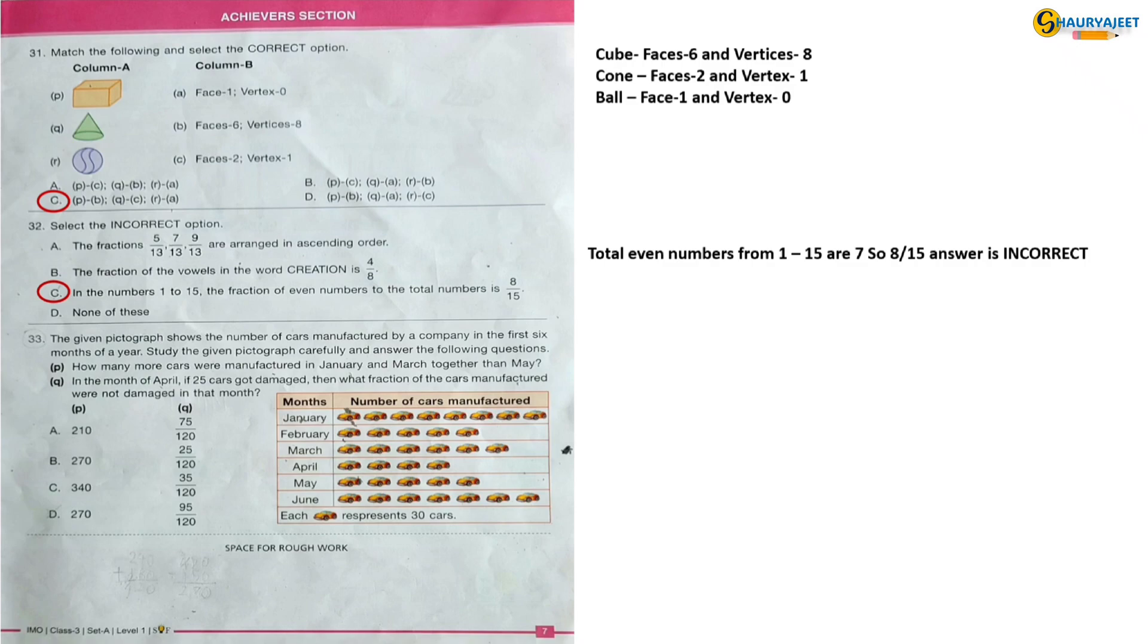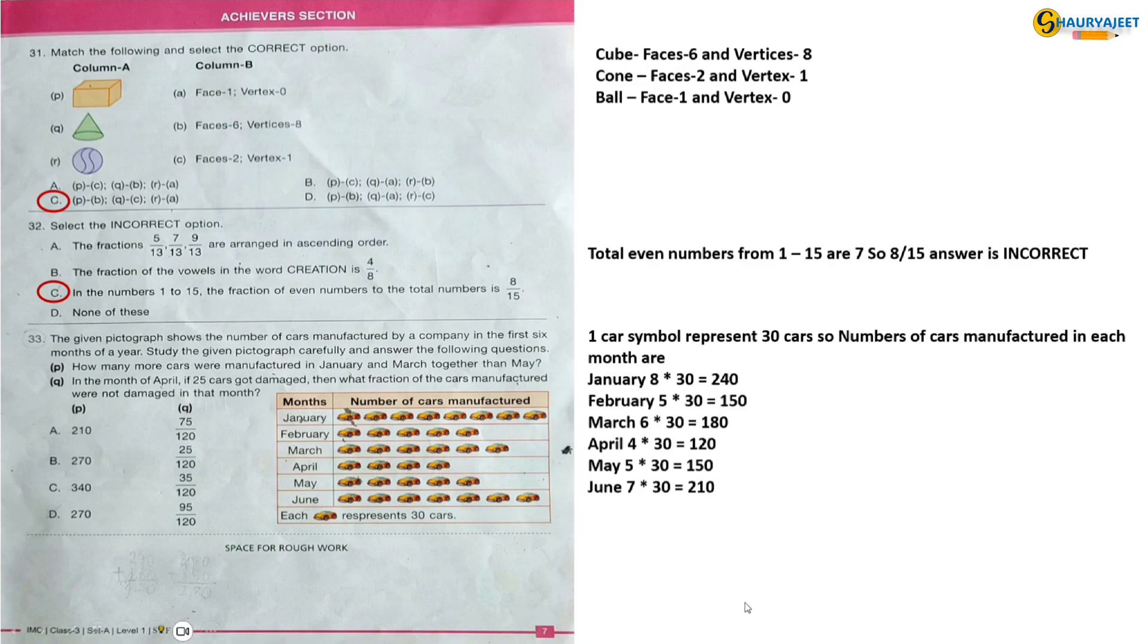Question 33: The given pictograph shows the number of cars manufactured by a company in the first 6 months of a year. Study the given pictograph carefully and answer the following questions. One car symbol represents 30 cars. Number of cars manufactured in each month are: January 240, February 150, March 180, April 120, May 150, and June 210. How many more cars were manufactured in January and March together than May? January and March combined will be 420 cars. If we minus 150 from 420, the answer will be 270.